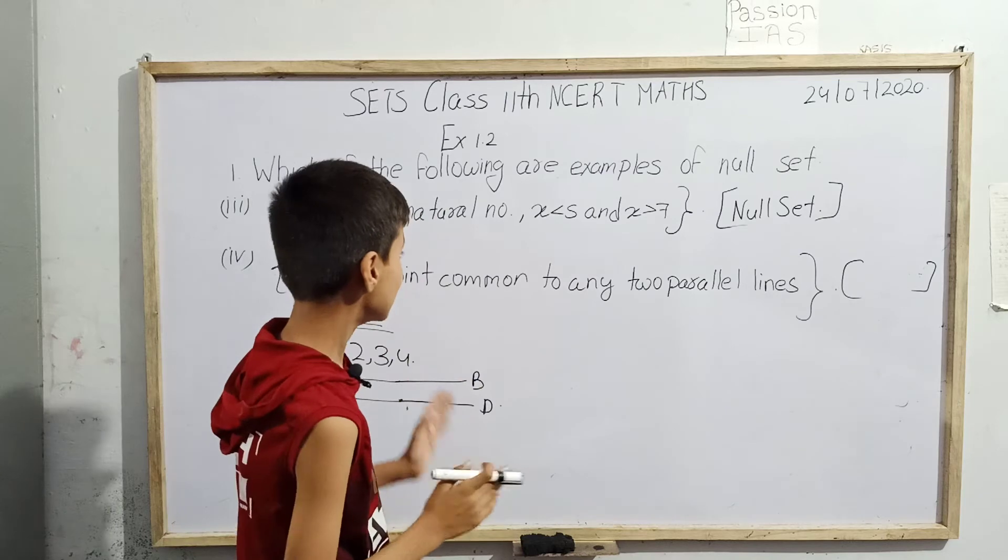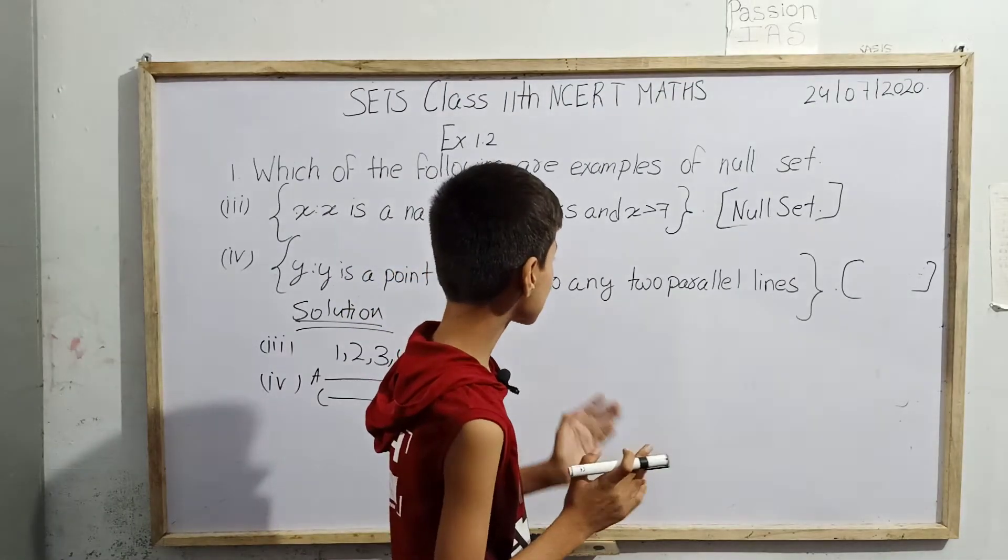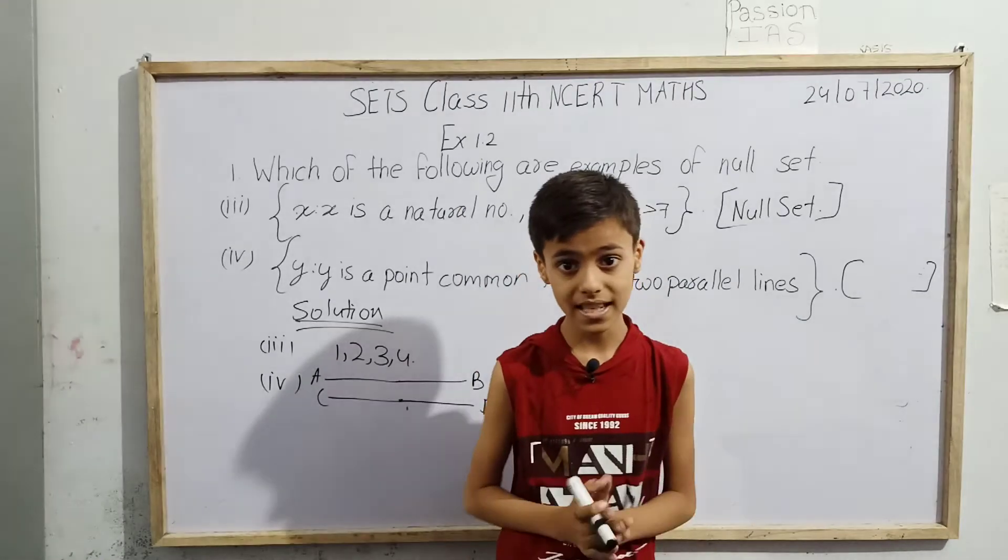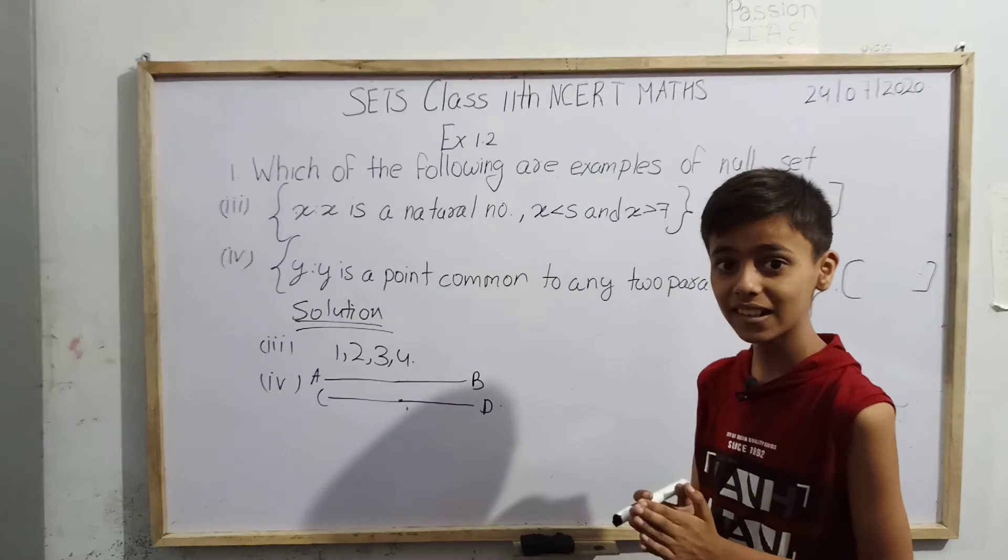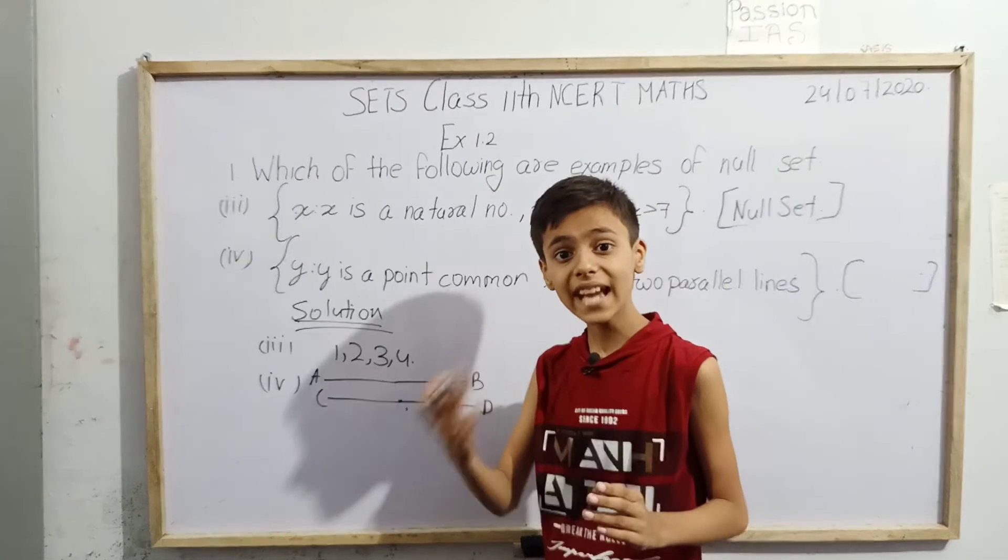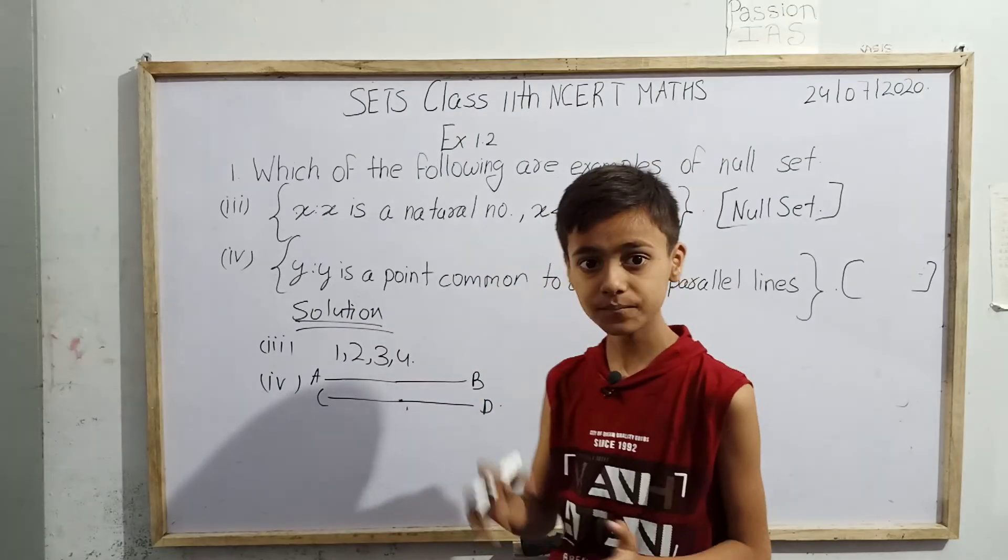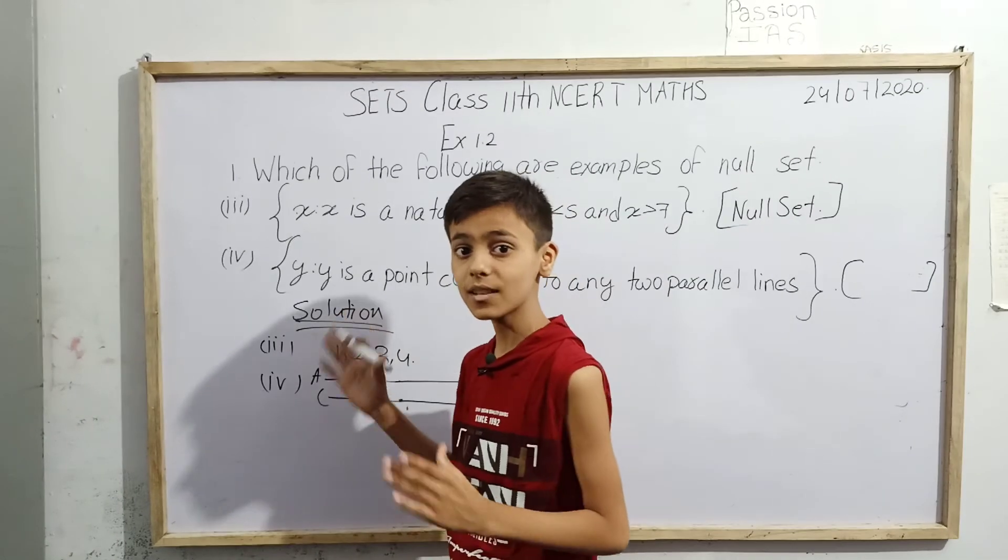As much as we extend any two parallel lines, there will be no point common. Then how can there exist such element in such a set where the set is saying its elements are the points common for any two parallel lines? How can it exist?